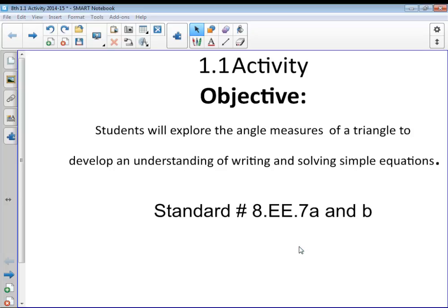Okay, this is 8th grade math, chapter 1, section 1, the activity that will go with the very first section. The objective for this lesson is students will explore the angle measures of the triangle to develop an understanding of writing and solving equations. The standard number that we will cover is 8.EE7 A and B.